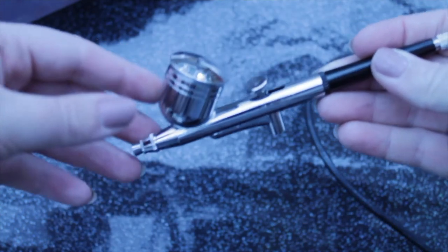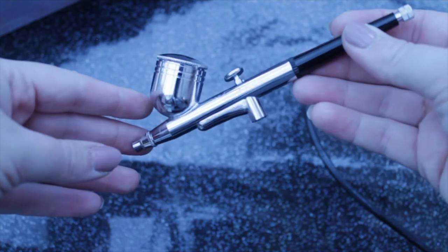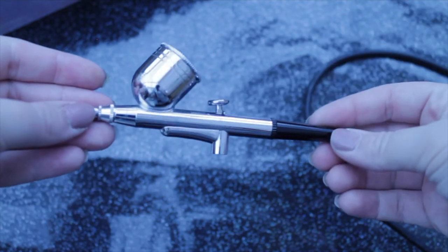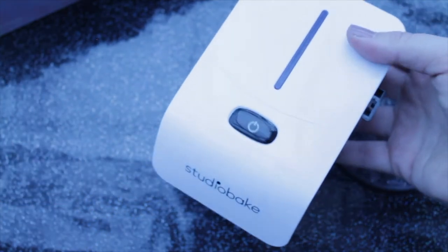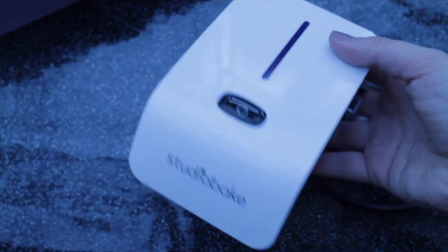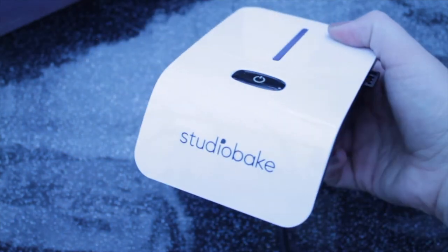This part here is where the airbrush colour comes out of. You fill colour into the little well, seal it and then once the air comes through the compressor and through the tube it then sprays out the end and creates beautiful designs on your biscuits. This is the compressor and it's really easy to use. It has one button to turn everything on and off. It comes with five different pressures that you control with that on-off button.